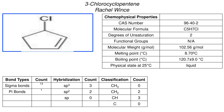Today we are going to be making 3-chlorocyclopentene. 3-chlorocyclopentene has a CAS number of 96-40-2 and a molecular formula of C5H7Cl. It has two degrees of unsaturation and has no functional groups.